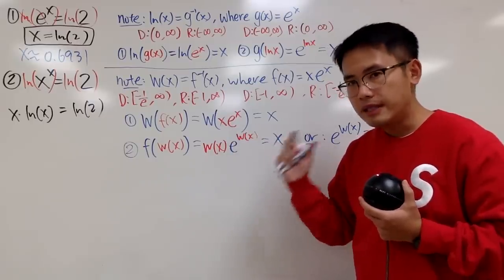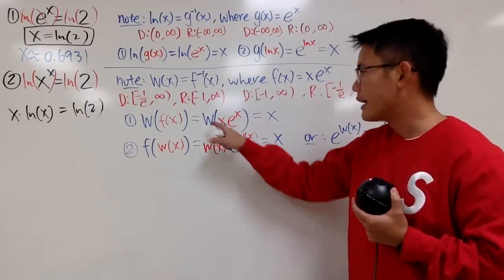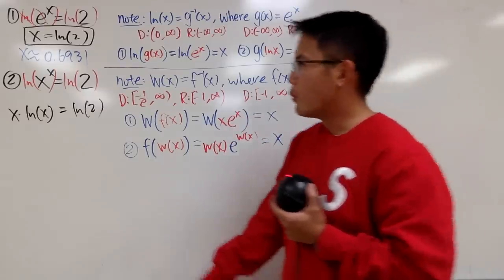Perhaps what we want is this right here. We want to have e for the base. And then, hopefully, the power and then the front are the same. So, I can apply w to it, so I can just get the x right here.